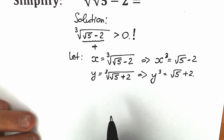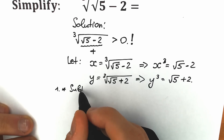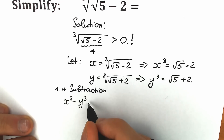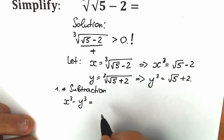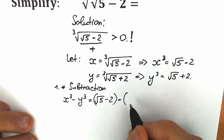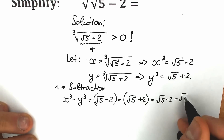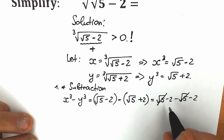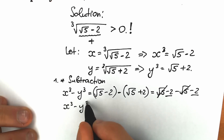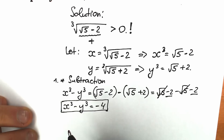Now let's see what happens when we subtract. Step 1 is subtraction: x³ minus y³. We have x³ = √5 − 2 and y³ = √5 + 2, so x³ − y³ = (√5 − 2) − (√5 + 2). The √5 terms cancel, giving us −2 − 2 = −4. So our first really important result is: x³ − y³ = −4.